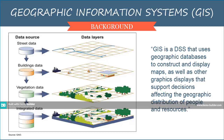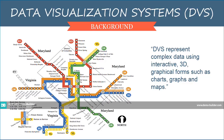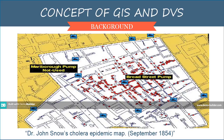Data Visualization System, or DVS, is a system that represents complex data using interactive 3D graphical forms such as charts, graphs, and maps. GIS and DVS is not a new concept. Back in September 1854, Dr. John Snow determined the source of a cholera epidemic in London by marking the location of the home of each victim with a dot on the map.